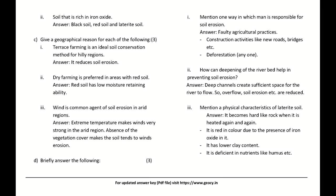Mention one way in which man is responsible for soil erosion. Answer: Faulty agricultural practices, construction activities like new roads and bridges, or deforestation — any one.